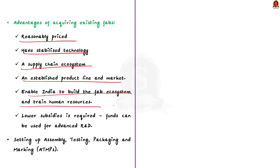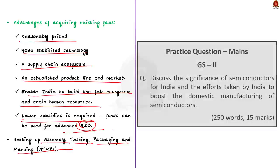Acquiring existing fabs will also enable India to build the fabrication ecosystem and train human resources. Apart from this, much lower subsidies would be required and the funds saved could be used for advanced R&D in fabrication technologies. This will help build state-of-the-art fabrication units in the next few years. Another strategy could be setting up assembly, testing, packing, and marking. Now we will move on to the next article discussion.